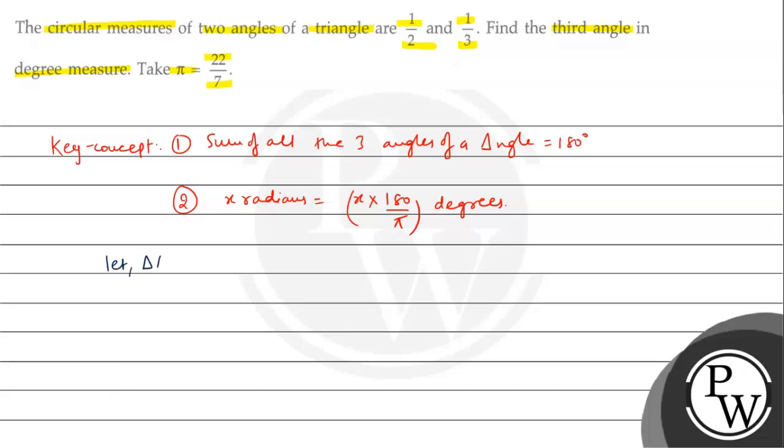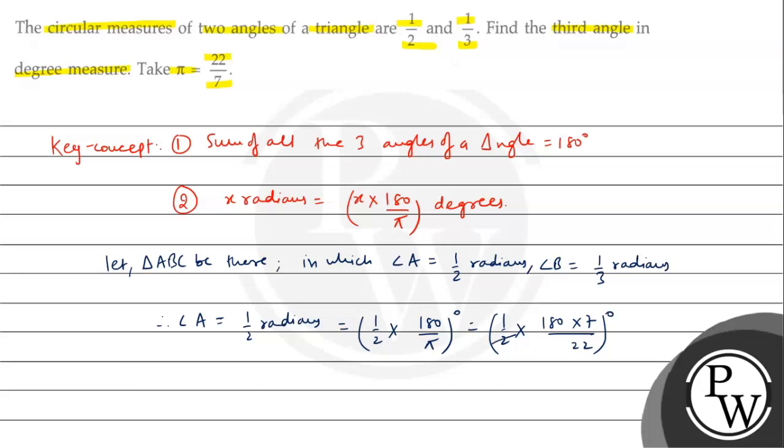So, let's assume that triangle A, B, C will be there in which angle A is half radians and angle B is 1 upon 3 radians. First, if you have to convert it in degree, then it will be 1 upon 2 into 180 into 7 upon 22. So, if you have to convert it in degree, then it will be 2, it will be 90, it will be 45.